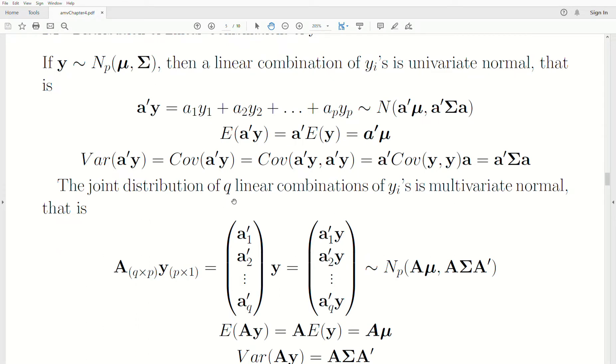Now the joint distribution of Q linear combinations of Y is multivariate normal. So if we take a matrix A times Y, now A is Q by P, Y is P by 1, so the result is a Q by 1 vector, which we're saying is multivariate normal. A can be thought of as this matrix with row vectors. This is Q by P times Y, which then the Y goes into each of those. This is multivariate normal Q variables, not P.